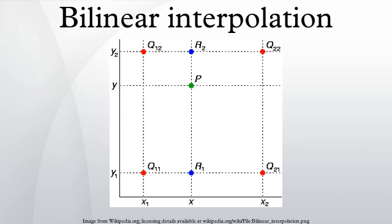In mathematics, bilinear interpolation is an extension of linear interpolation for interpolating functions of two variables on a regular 2D grid.